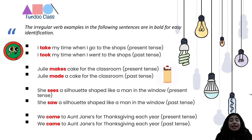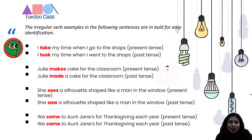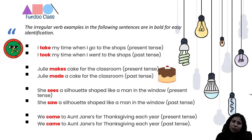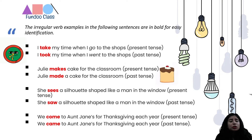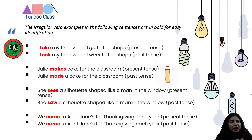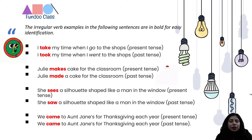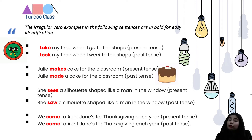Let's take a look at the second set. 'Julie makes a cake for the classroom' — present tense. 'Julie made a cake for the classroom' — past tense. You can see that 'make' becomes 'made', which makes it an irregular verb. Third example: 'She sees a silhouette shaped like a man in the window.' In past tense: 'She saw a silhouette shaped like a man in the window.' So 'saw' is the irregular past form of 'see'.